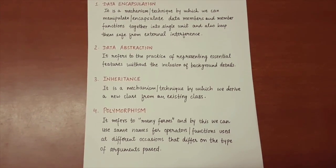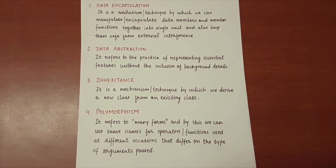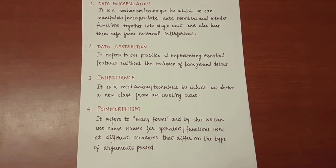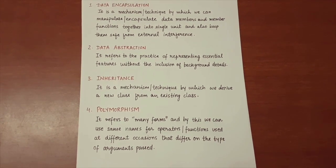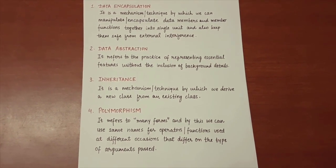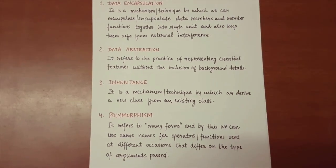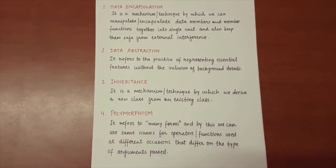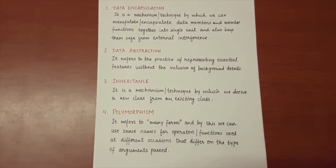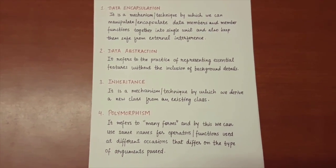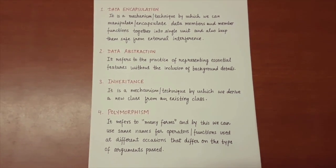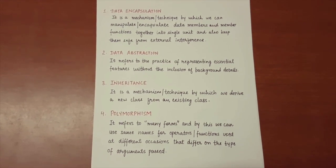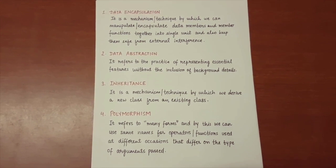Data abstraction refers to the practice of representing essential features without the inclusion of background details. Then we have inheritance, which is a mechanism by which we can derive a new class from an existing class — it satisfies the principle of reusability in C++. The last point is polymorphism, which refers to many forms, allowing the same names for operators or functions used at different occasions with different argument types. This gives us operator overloading and function overloading.